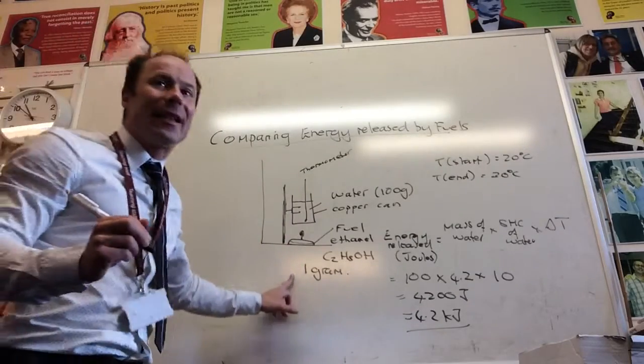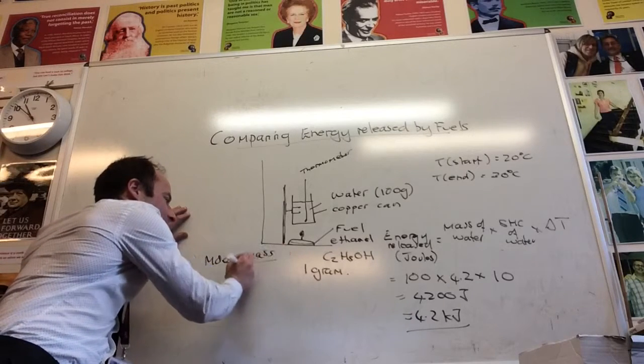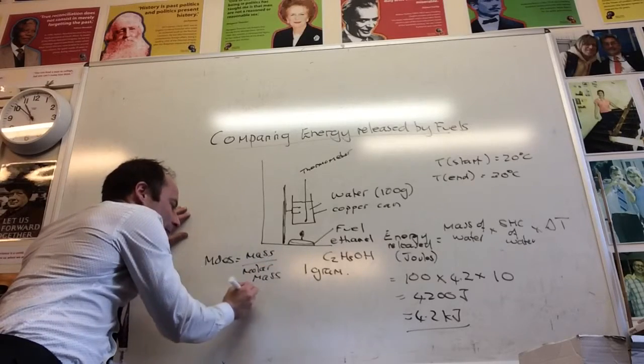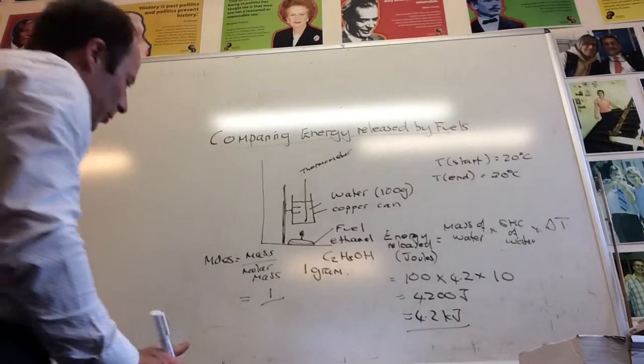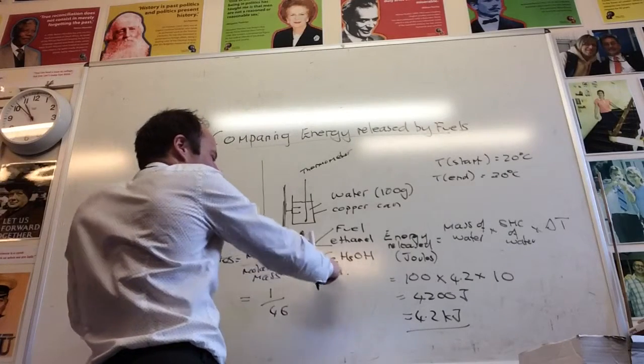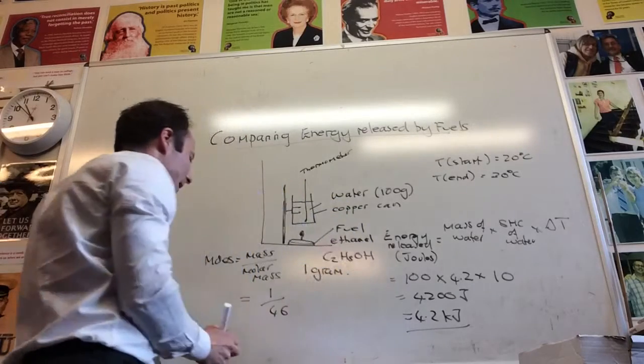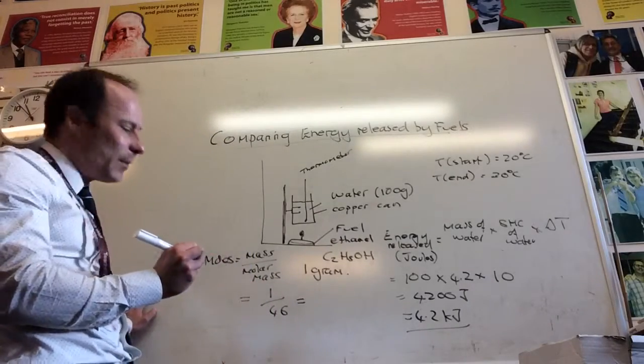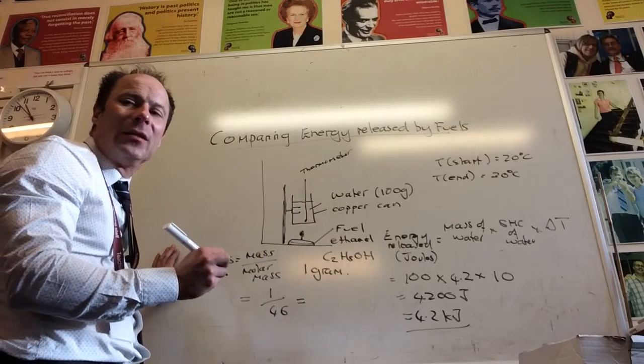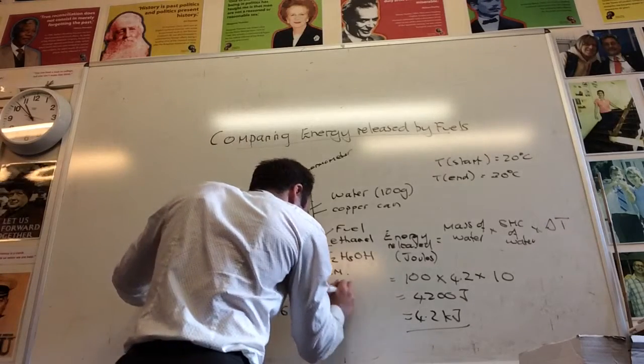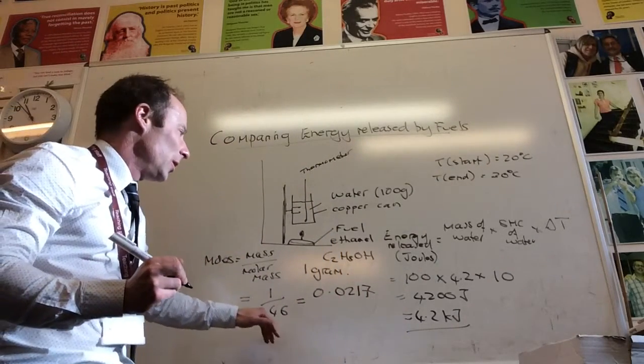How do I convert mass into moles? Moles is mass divided by molar mass. The mass of fuel that I burnt was 1 gram. The molar mass of ethanol is 46—2 times 12 is 24, plus 16 is 40, that's 46. So 1 divided by 46, can someone tell me what that comes to? 0.0217.